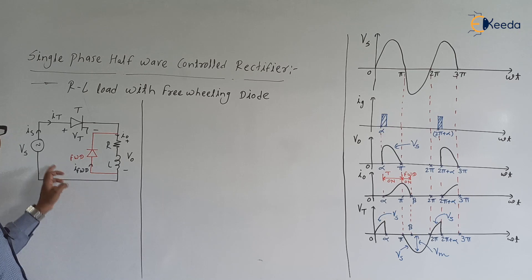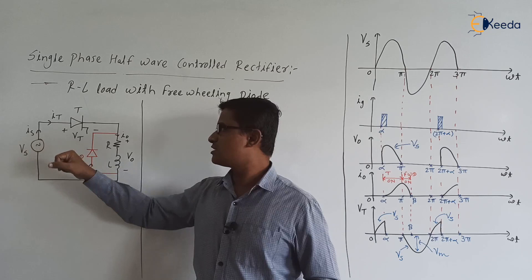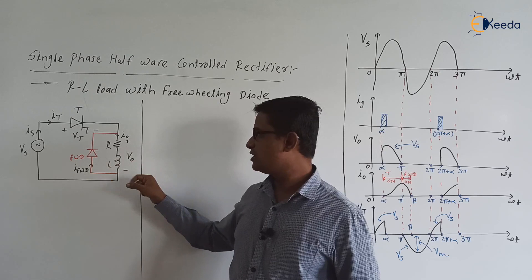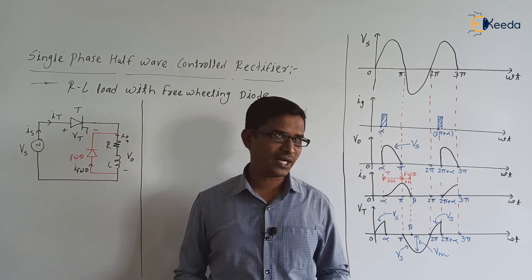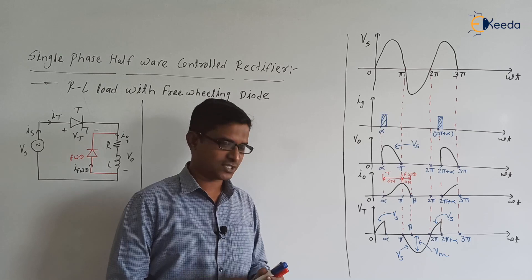The supply voltage Vs is equal to Vm times sin(ωt). From ωt = 0 to π, Vs is positive; from π to 2π, Vs is negative. Is is the supply current, Vt is the voltage across the thyristor, It is the current through the thyristor, V0 is the voltage across the load, I0 is the load current, and IFWD is the current through the freewheeling diode.